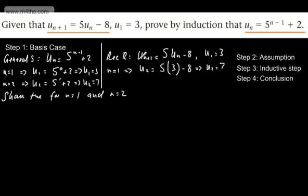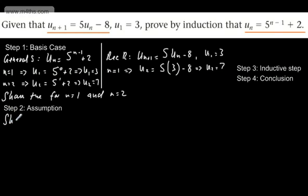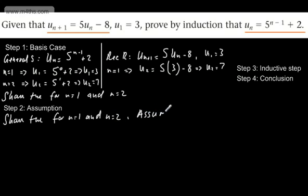We can now state shown true for n equals 1 and n equals 2. All we've done is shown the first term is the same and the second term matches using both the general statement and the recurrence relation. We now move to step 2, the assumption. The step 2 doesn't change.